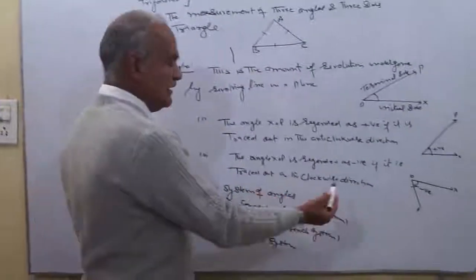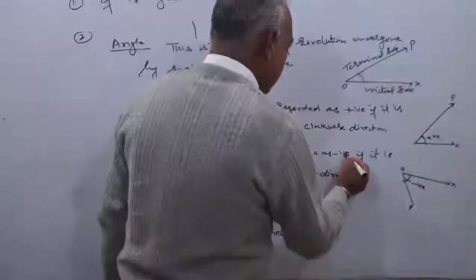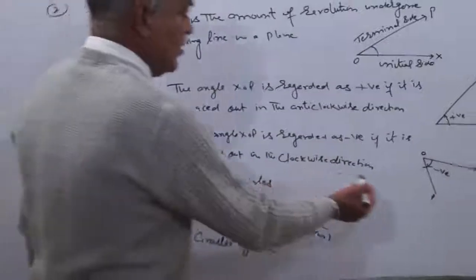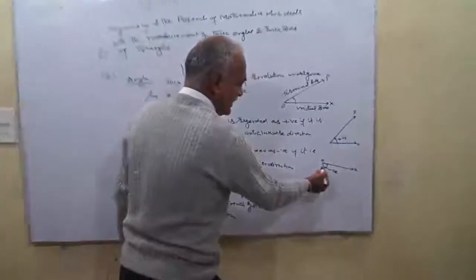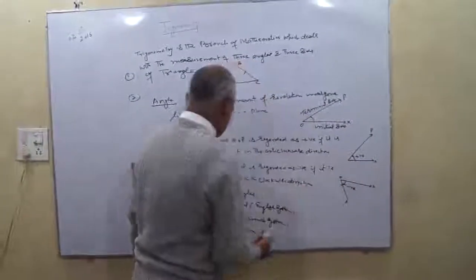The angle XOP is regarded as negative angle if it rotates in the clockwise direction. Here is clockwise direction and this is anti-clockwise direction.